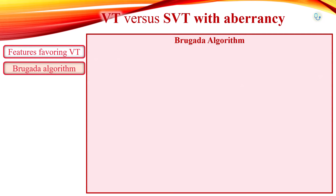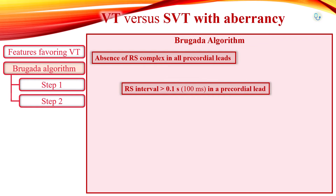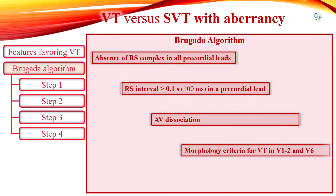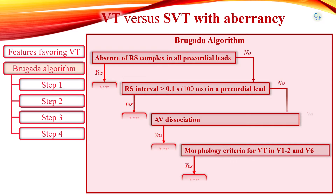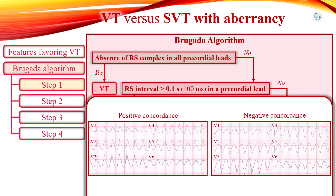For difficult cases, the Brugada algorithm can be used to differentiate between VT and SVT with aberrancy. In the Brugada algorithm, the following criteria are observed: absence of RS complex in all precordial leads, R to S interval more than 100 ms in one precordial lead, atrioventricular dissociation, and morphology criteria for VT present in both precordial leads V1/V2 and V6. The algorithm is followed from top to bottom — if any criterion is met, ventricular tachycardia is diagnosed. Absence of RS complex in all precordial leads is synonymous with positive or negative concordance. If all precordial leads consist of either monophasic R or S waves, VT is diagnosed.